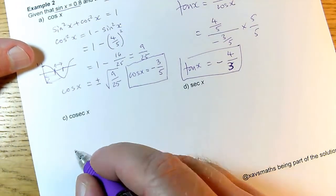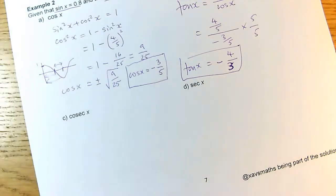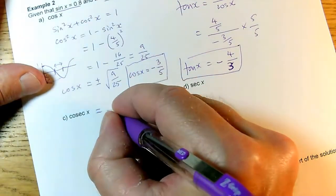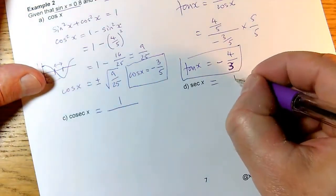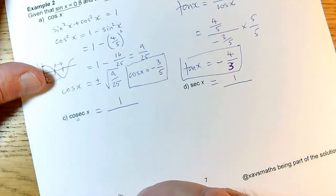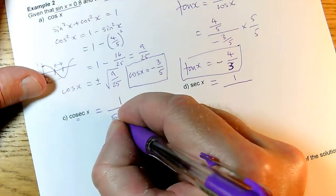Cosec x - now for the last two parts with these new trig functions, I need to remember what they mean. They both mean the reciprocal of one of the trig functions we already knew. How do I tell which one? I look at the third letter. This third letter is an s, so it's 1 over sin x.